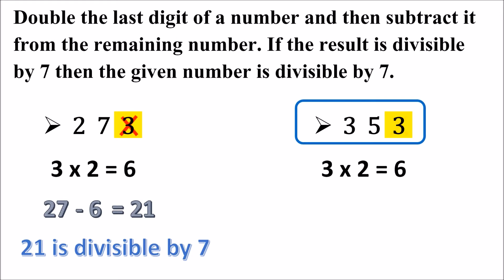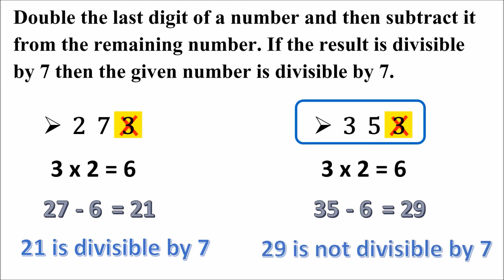Now we will subtract 6 from the remaining digits of the given number. Except 3, whatever is left is 35. So 35 minus 6 equals 29. Is 29 divisible by 7? No, 29 is not divisible by 7 since 29 is not a multiple of 7. Therefore the given number is not divisible by 7.